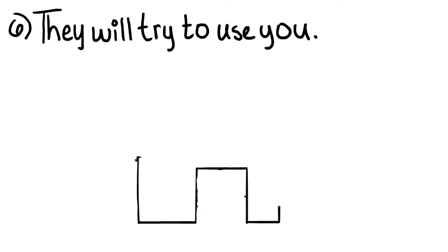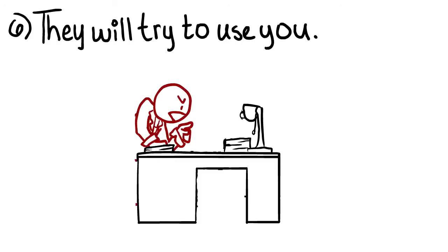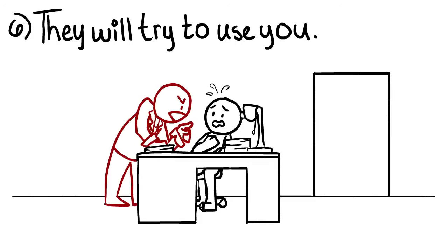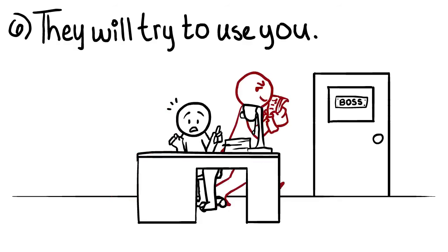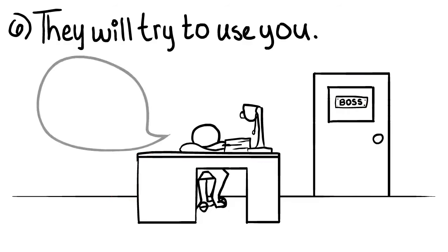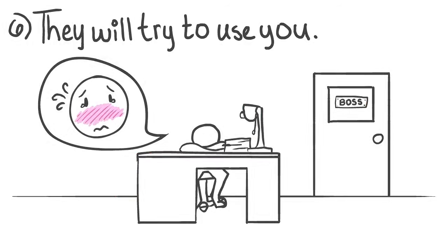6. Psychopaths Will Try To Use You. The end goal of a psychopath is to get something from you. Many times, this is simply to watch you die, or to rape and sexually humiliate you. Other times, it can involve manipulating you into achieving their goals.